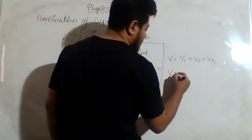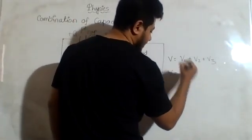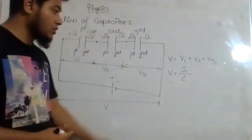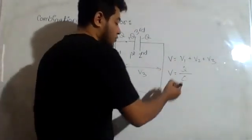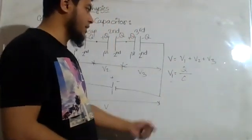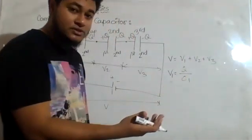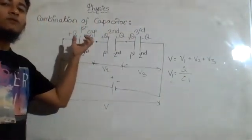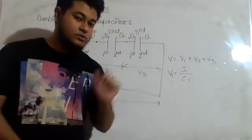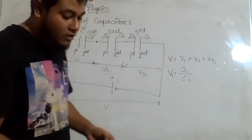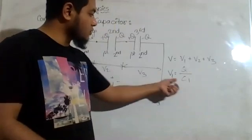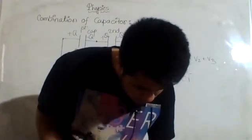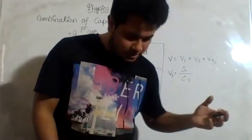We already know that V is equal to Q divided by C, where V is the potential difference, Q is the amount of charge, and C is the capacitance. Now, the potential differences are different for all capacitors, and the capacitance is also different for different capacitors, but the amount of charge Q is the same — because the same amount of charge is stored in each capacitor. Now what I will do is simply cross-multiply to find the values. I want to replace all the capacitors by an equivalent capacitor. Let us say the equivalent capacitor is Cs.